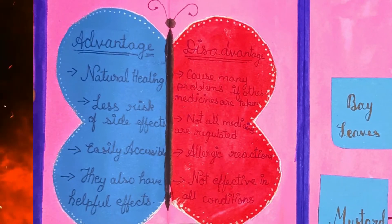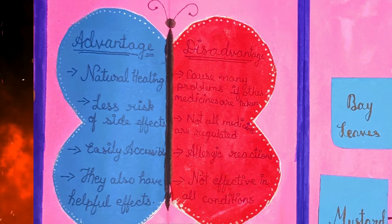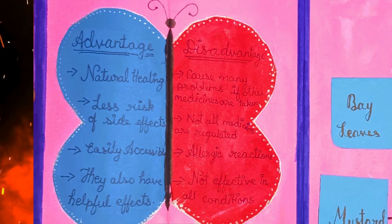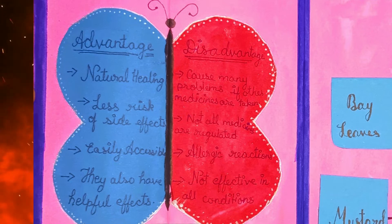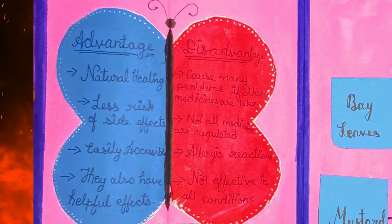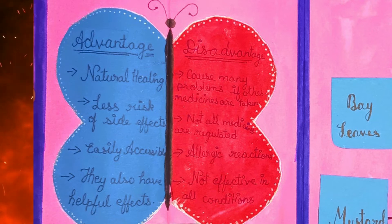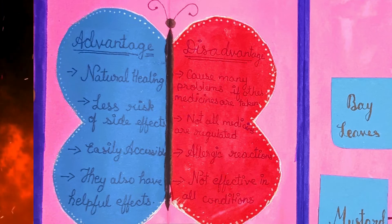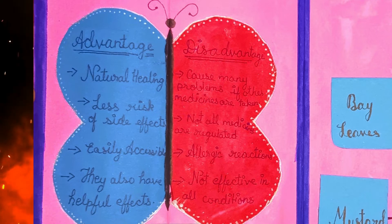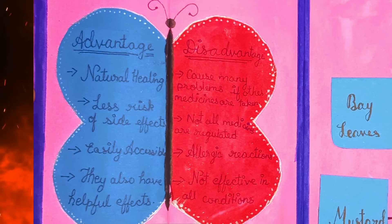Advantages of traditional medicine include natural healing, less risk of side effects, easy accessibility, and helpful effects. Disadvantages include causing problems when taken with other medicines, lack of regulation, allergic reactions, and not being effective in all conditions.